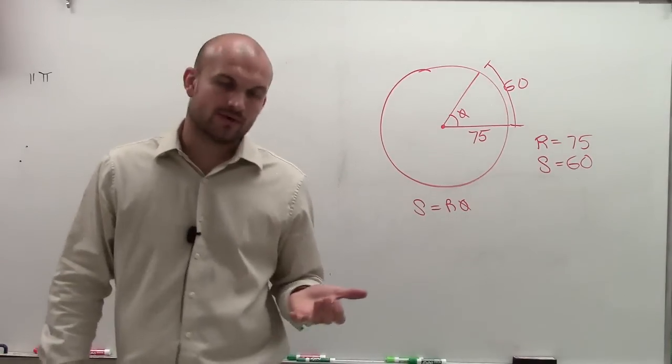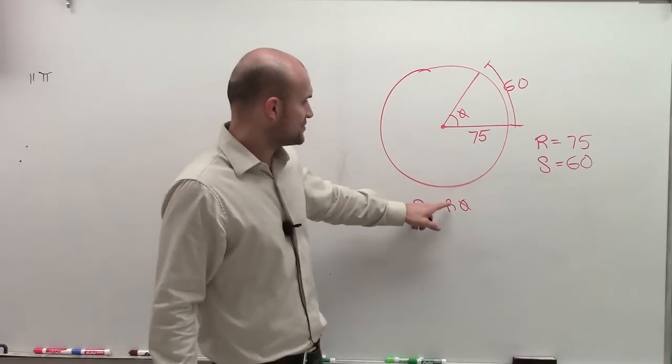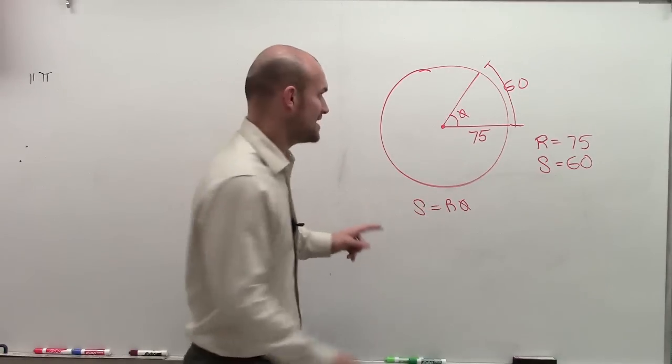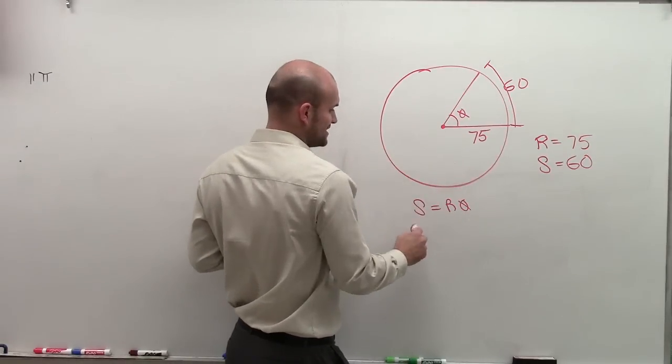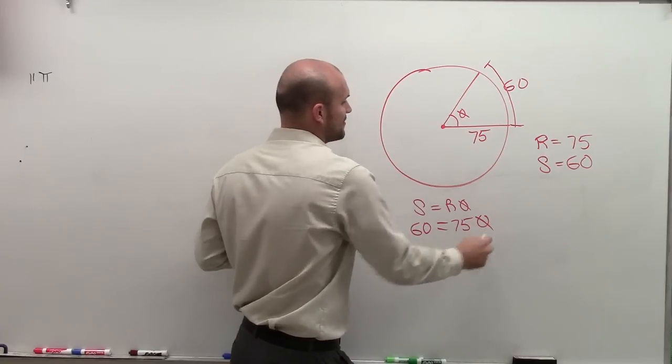So if I can determine what my radius is and my theta, then I can find the arc length. However, we're not trying to find the arc length. We actually already have the arc length, which is 60. So if I know 60 and I know the radius, what is going to be my theta?